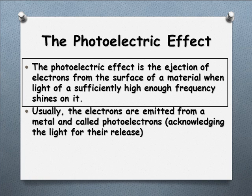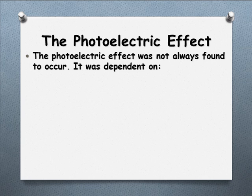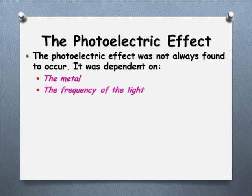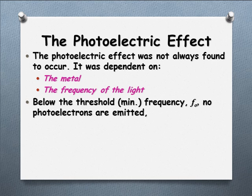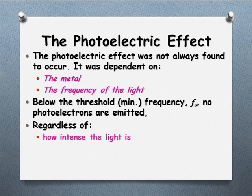When they investigated this further, what they found was that the photoelectric effect did not always occur — it depended on a couple of things. Firstly, it depended on the type of metal. Secondly, it depended on the frequency of light — different frequencies gave different amounts of electrons and different amounts of energy to the ejected electrons. They also found a threshold frequency: the minimum frequency below which no photoelectrons were emitted, regardless of how intense the light was or how long it was left shining.